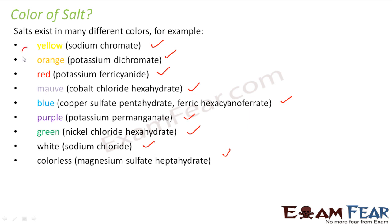If you don't remember this name that's okay. The point is that the salt exists in many colors. We have salt and they exist in many colors. It can be yellow, orange, red, blue, purple, green, white, colorless. It can be any color. But it's good to know the color of salts like copper sulfate pentahydrate or potassium permanganate because we use this from time to time.